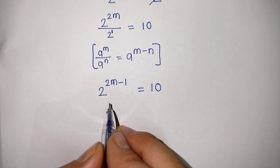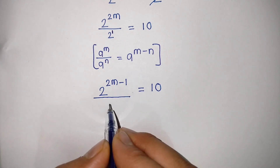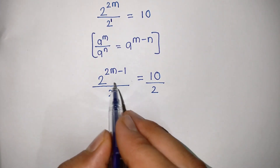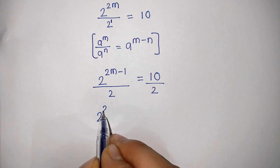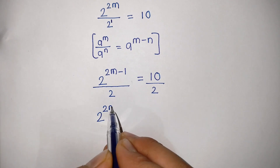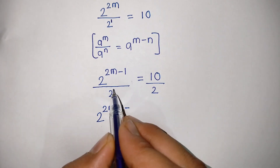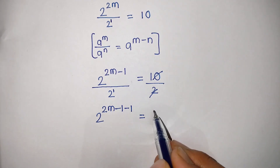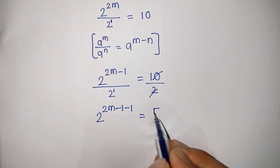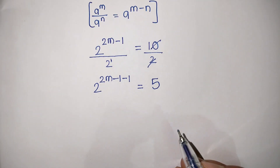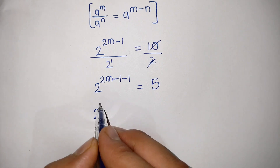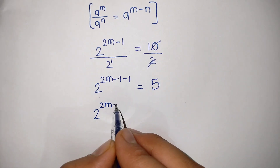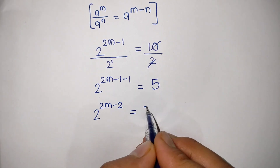Now again divide both sides by 2. We can write 2 to the power 2m minus 1 minus 1 is equal to 10 divided by 2, which is 5. So 2 to the power 2m minus 2 is equal to 5.